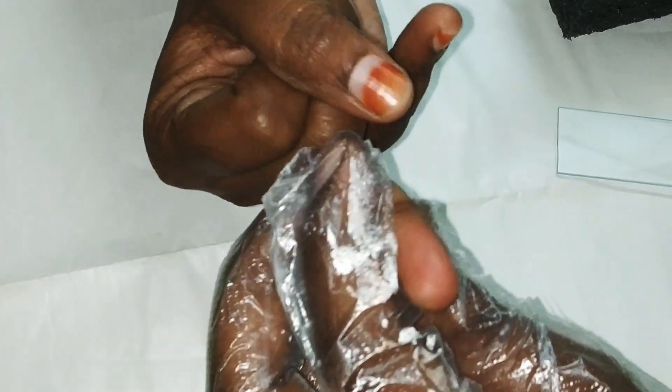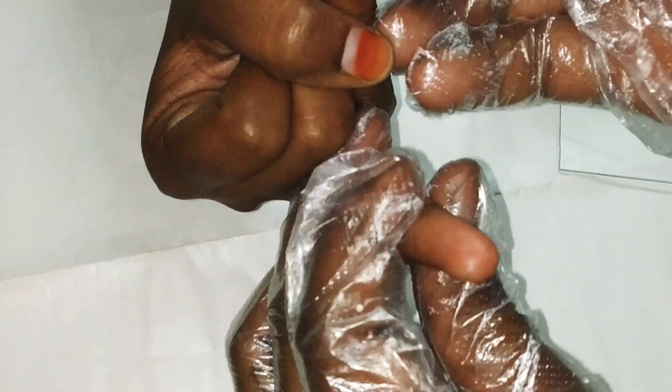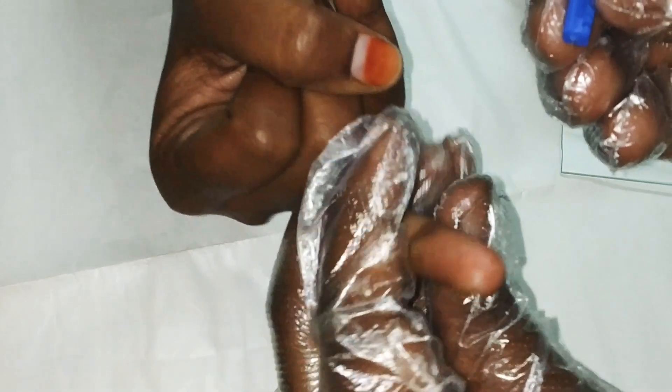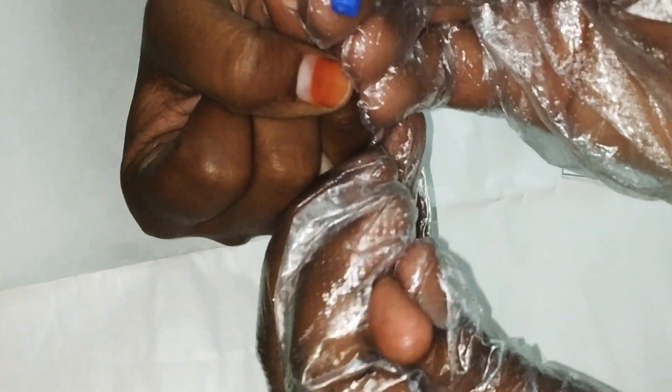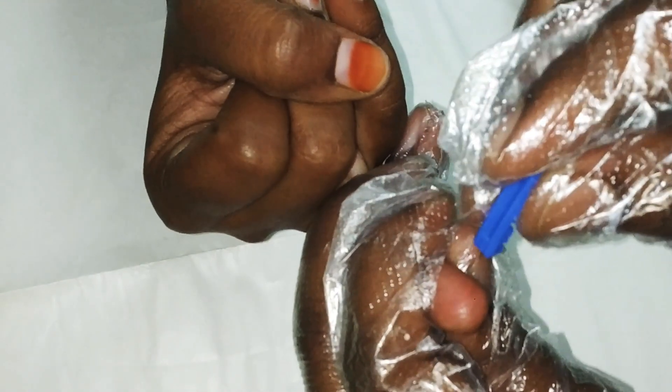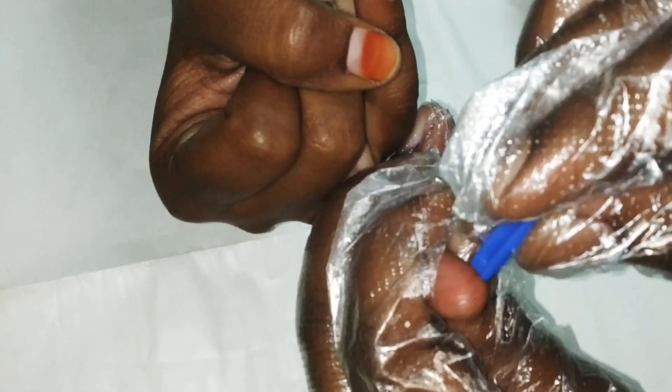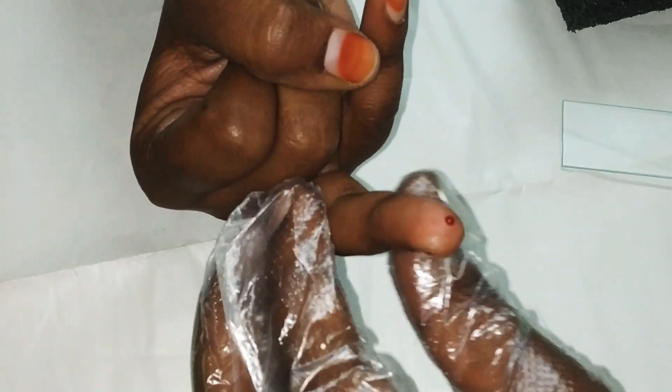Now it is completely clean. So now we are taking a fresh lancet. Here we go. We are going to catch the finger of the patient, the ring finger. Hold the finger tightly because the patient will have some fear and they can pull their finger back. Make a gentle puncture. Yes, so collect three drops of blood on a fresh glass slide.